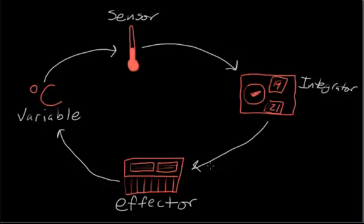So we have a loop here, and we're constantly monitoring the variable using the sensor, and making a decision whether or not to activate our effector.